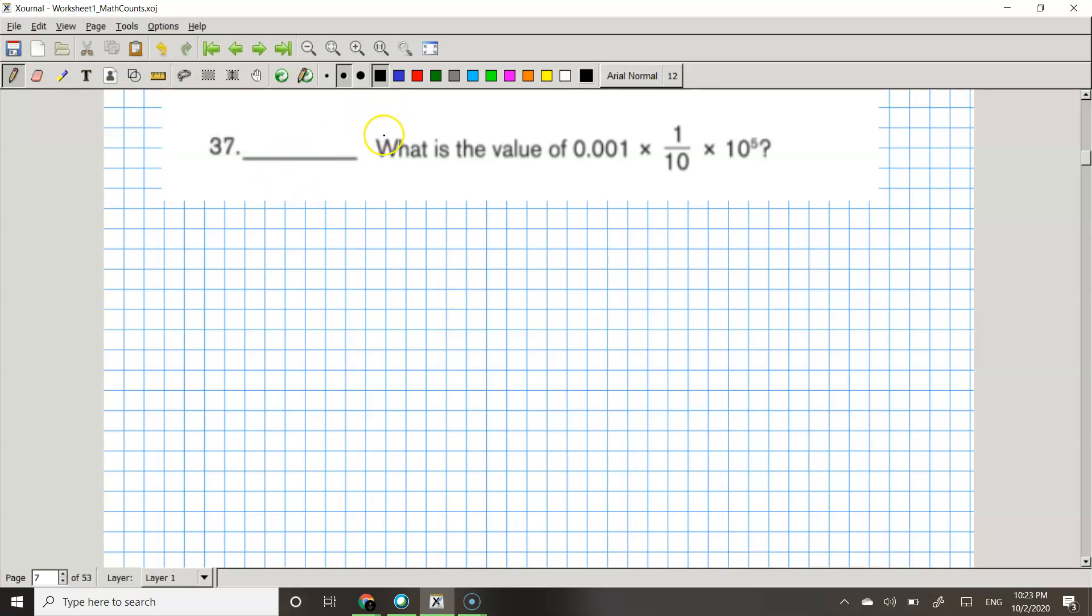So the question asks, what is the value of 0.001 times 1 over 10 times 10 to the power of 5?